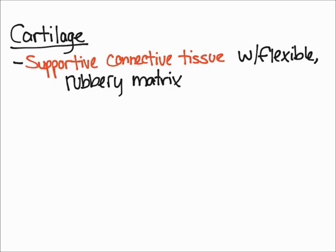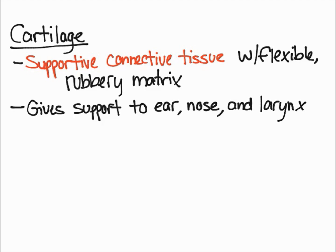In this video, I'm going to talk about what cartilage is as well as the functions of cartilage. Cartilage is a supportive connective tissue that has a flexible and rubbery matrix. Because it's so flexible and rubbery, this allows it to give shape to your ear, the tip of your nose, as well as your larynx. So it's a pretty important supportive connective tissue.